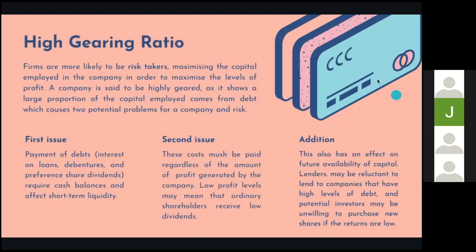I'll be explaining about high gearing ratio. Firms are more likely to be risk takers, maximizing the capital employed in the company in order to maximize the levels of profit. A company is said to be highly geared as it shows a large proportion of the capital employed comes from debt, which causes two potential problems for a company and risk. For the first issue, payment of debts includes interest and loans, debentures, and preference share dividends require cash balances and affect short-term liquidity.